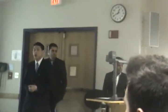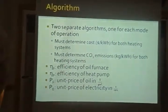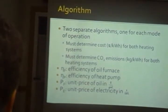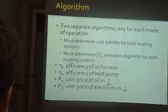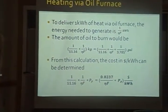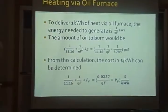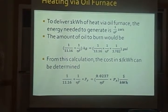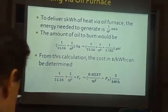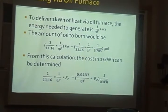We needed to determine the cost of each heating system as well as the carbon dioxide produced, expressed in dollars per kilowatt-hour of heat delivered and kilograms per kilowatt-hour of heat delivered. The values A_F and A_P represent the efficiency of the oil furnace and heat pump respectively, and P_F and P_E are the unit prices of oil and electricity in the region. For the oil furnace, the energy needed to deliver one kilowatt-hour of heat is simply the inverse of the furnace efficiency. From that, we calculate the amount of oil to burn and then determine the cost using unit conversion.